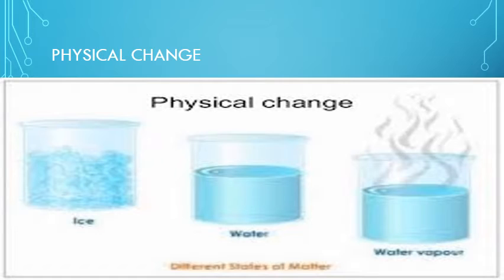When a physical change takes place, no new substance is formed. But there may be a change in the size, shape, and state of the substance. In physical changes, the size and shape of the matter can be changed, as well as the state — like when freezing water, it is still water but only the state changes, which is now ice. And in a physical change, we can get back the original matter.